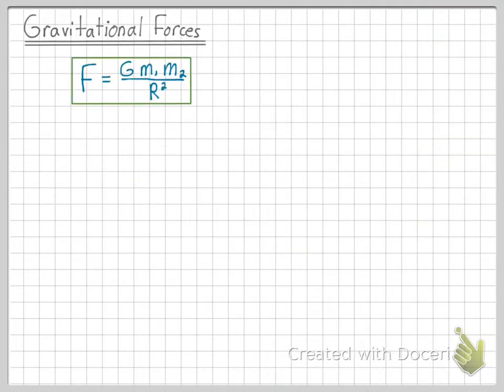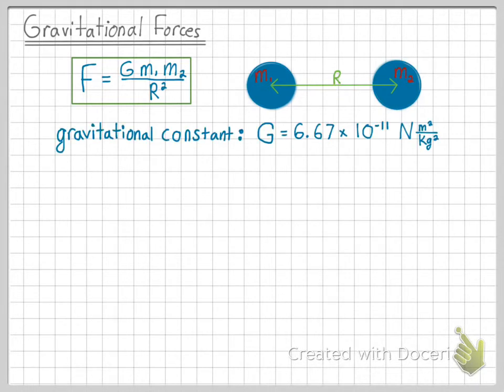So this is the equation that we will use to find gravitational force: F = Gm₁m₂/R², where m₁ and m₂ are the masses of the two different objects, and R is the distance between the centers of those two different objects. G is a gravitational constant which is equal to 6.67 times 10 to the negative 11th, and has the units newton meters squared over kilograms squared.